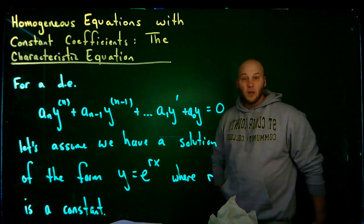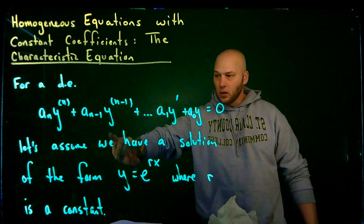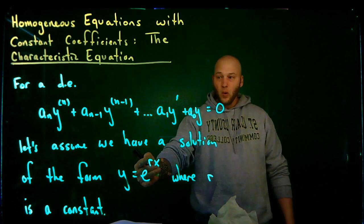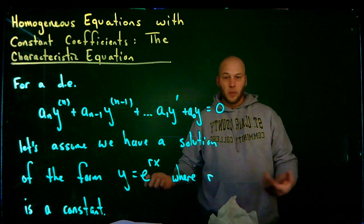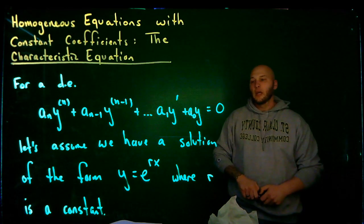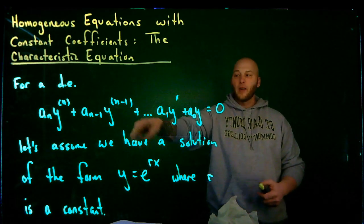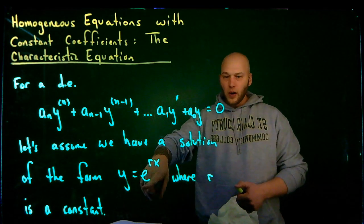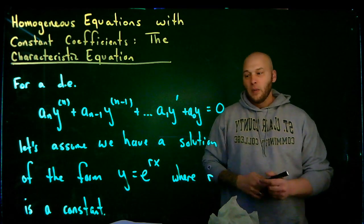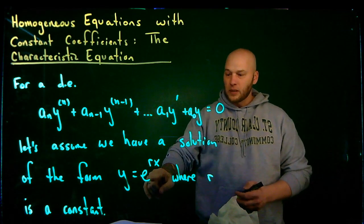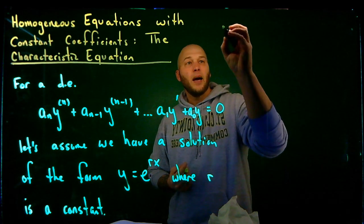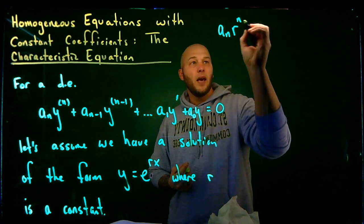Let's go ahead and see what the requirements on r would be. One reason why this form is nice is because derivatives of the exponential function are just the exponential function with a factor of r coming out via the chain rule. The first derivative brings out one factor of r, the second brings out two, so plugging into the nth derivative gives the exponential times r to the n.